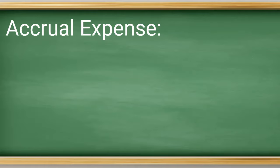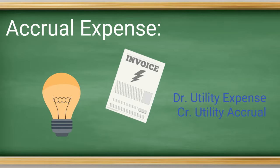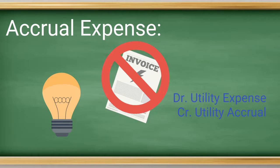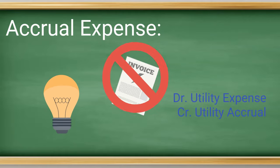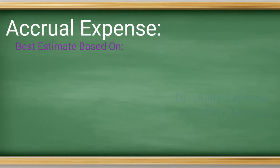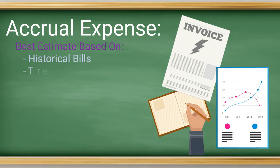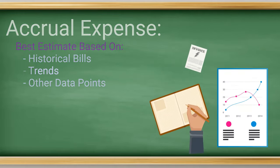Another typical adjusting entry involves accruals for goods or services that you've received but perhaps have not been invoiced for yet. For example, if you've consumed electricity all month but haven't received your electric bill, you still need to recognize that expense under accrual accounting. In some circumstances, you may have to make an estimate based on historical experience, trends, or other data points to make the best accrual.